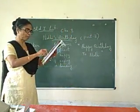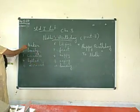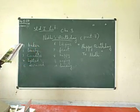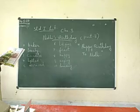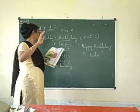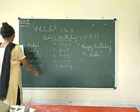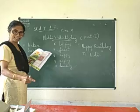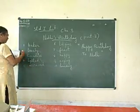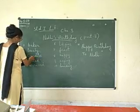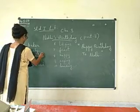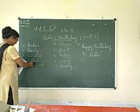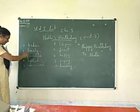Now see some new words in this paragraph. Baker: B-A-K-E-R — one who bakes cake, buns, and biscuits in the bakery. Next word: lovely — L-O-V-E-L-Y. Say each letter and repeat the word. Next: candle — C-A-N-D-L-E-S. In Hindi you say 'mombati'. They are on the cake. Lighted — L-I-T-E-D — means the candles are lit.